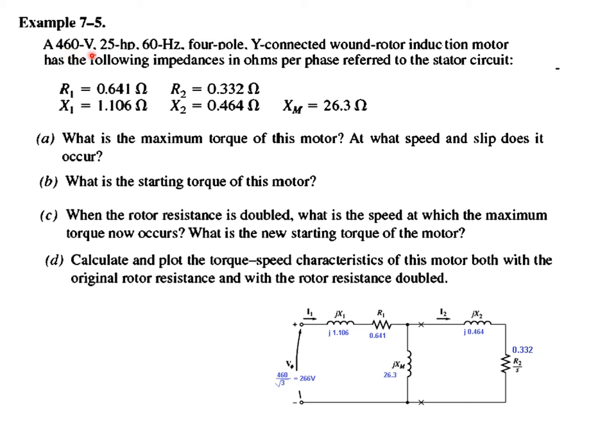A 460-volt, 25-horsepower, 60-hertz, 4-pole, Y-connected wound rotor induction motor has the following impedances. I have drawn the equivalent circuit for the induction motor and plugged in all the values given here: R1, X1, and so on. The voltage given, 460 volts, is line to line voltage. We have to convert that to line to phase voltage by dividing by root 3. So the phase voltage is 266 volts.